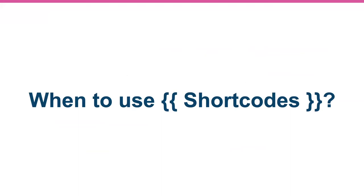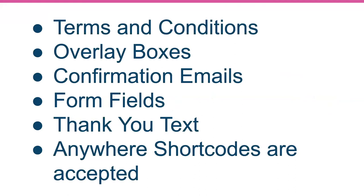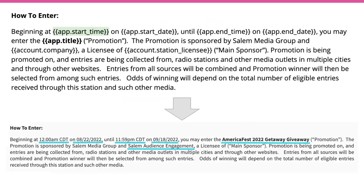This is more of an awareness webinar. You can add short codes to your terms and conditions, overlay boxes, confirmation emails, form fields, and thank you text — anywhere short codes are accepted. Shout out to Salem for this example using short codes in their terms and conditions. You can see short codes added to a screenshot of their terms and conditions — the top shows what it looks like on the back end, and the bottom shows how the placeholders are replaced with real data inserted into the terms and conditions.